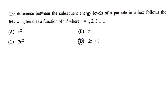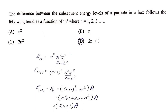The next question: the difference between subsequent energy levels of a particle in a box as a function of N. We know the energy is E_n = N²·ℏ²π²/(2mL²). The energy of the (N+1) level is E_(N+1) = (N+1)²·ℏ²π²/(2mL²). The difference E_(N+1) − E_N = [(N+1)² − N²]·A = [N² + 2N + 1 − N²]·A = (2N+1)·A. Therefore, the answer is 2N+1.